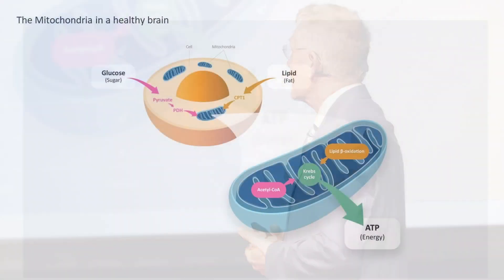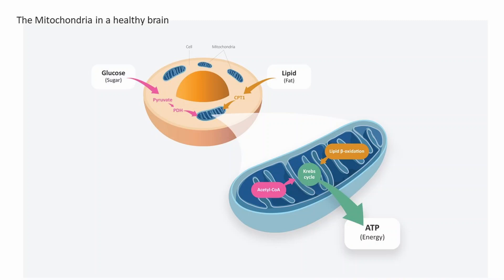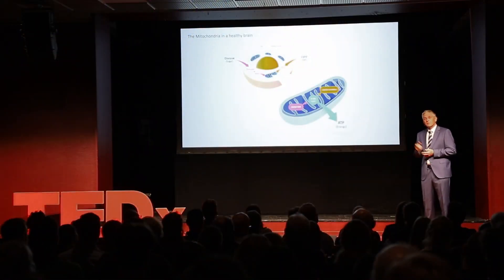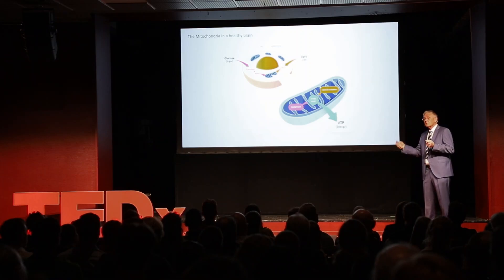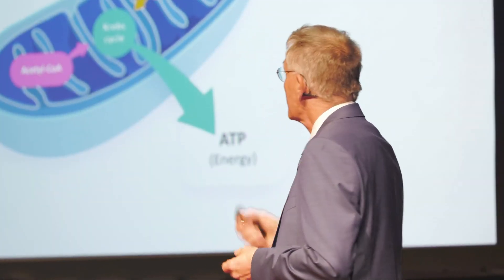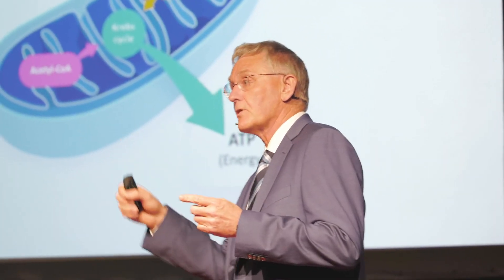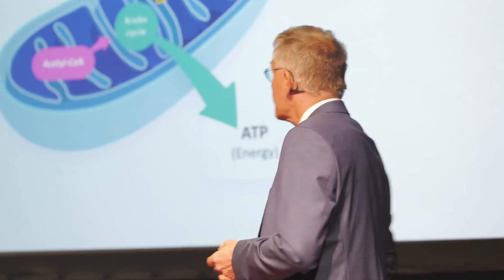Let's look at how energy is actually generated in your body. Every cell has these blue organelles called mitochondria — the energy factories in your cell. As fuel, they can predominantly use two different types: either glucose or fats (lipids). When glucose enters your cell, it's converted into pyruvate, which is transported into the mitochondria and converted into acetyl-CoA. Acetyl-CoA then goes into the Krebs cycle, where you produce energy — and in biology, energy is ATP.